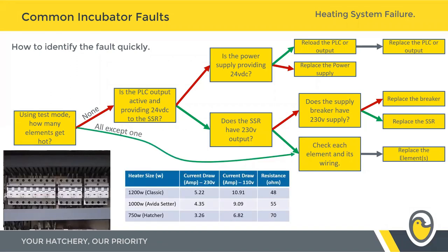Back to the test mode: if all except one heating element heats up, you can rule out a large portion of the decision tree because you know the controls are working, the solid state is working, and you can go straight to diagnosing the individual heating element. The table at the bottom of this page shows the expected current draw and resistance for each of our heating elements — these will vary slightly based on your local voltage, but it's worth documenting these specifically for your site.